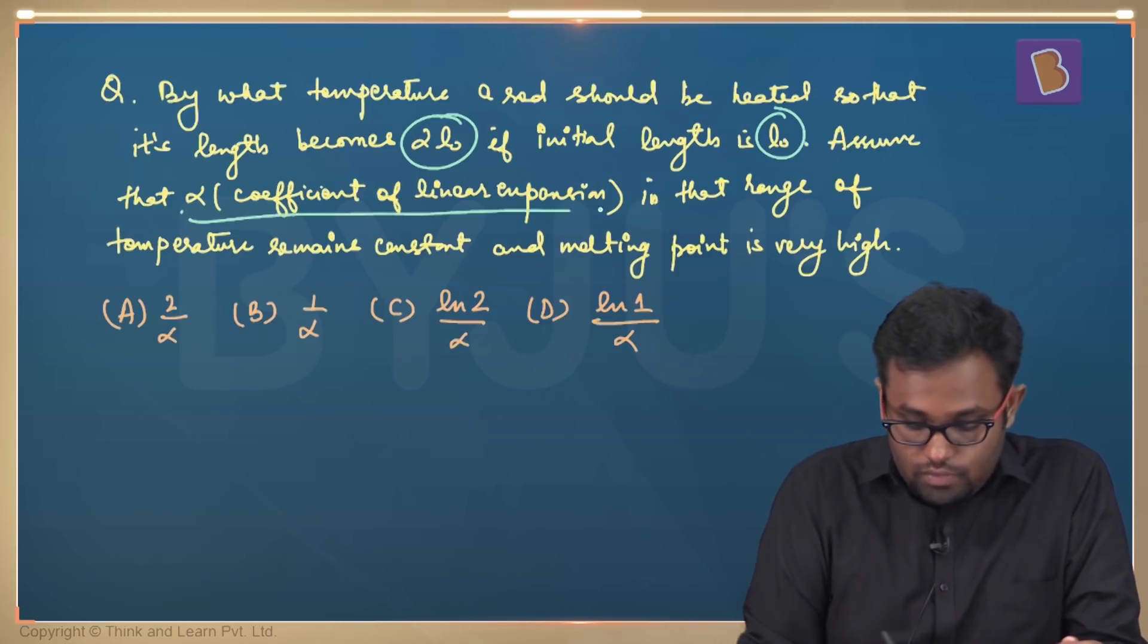Assume that alpha, that is the coefficient of linear expansion, in that range of temperature remains constant and melting point is very high.